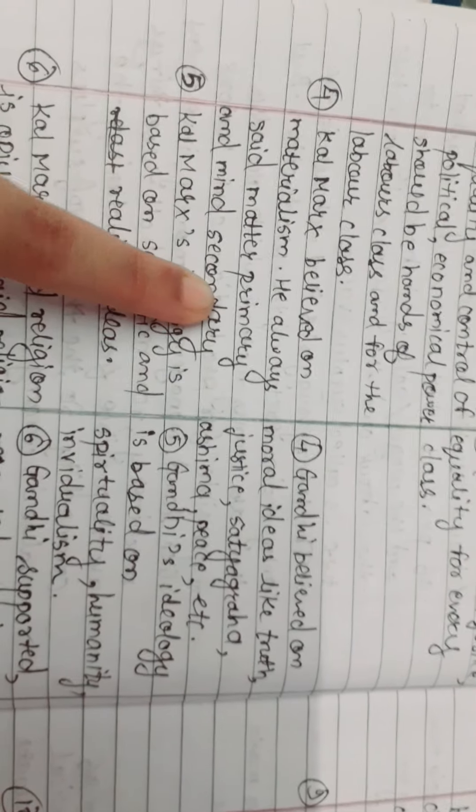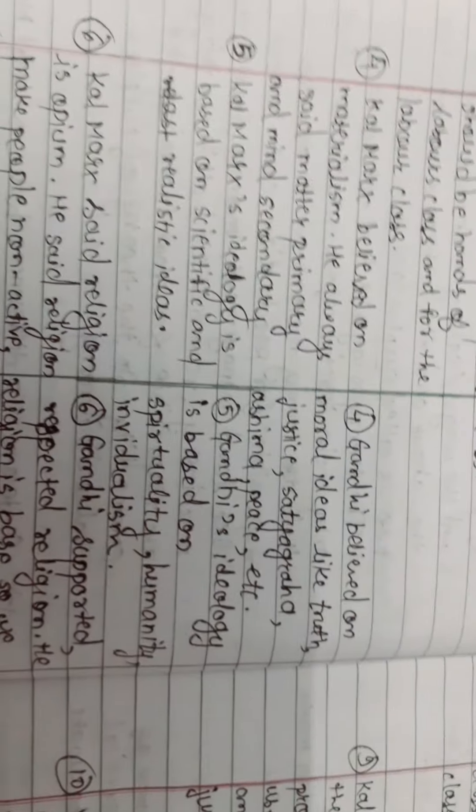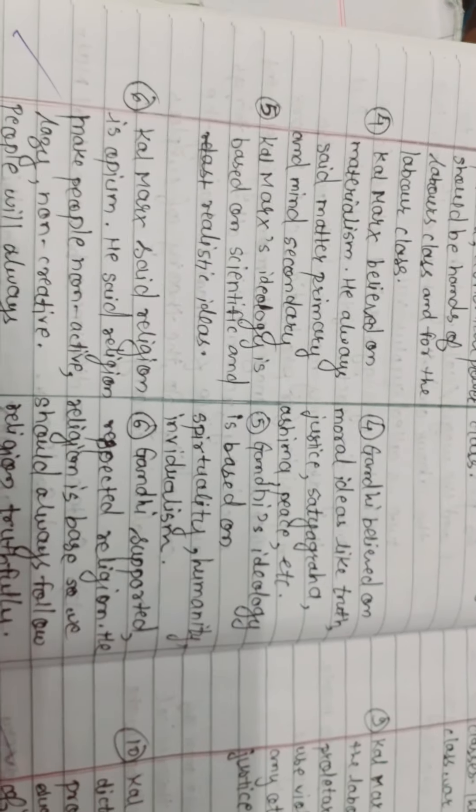Karl Marx believed in materialism. He always said matter is primary and mind is secondary. Gandhi believed in moral ideas like truth, justice, satyagraha, ahimsa, and peace.